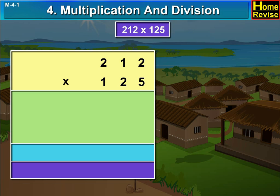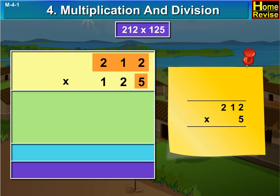In this, first let us multiply 212 by 5. 5 twos are 10. We write 0, carry forward 1. 5 ones are 5, plus 1 is 6. 5 twos are 10.